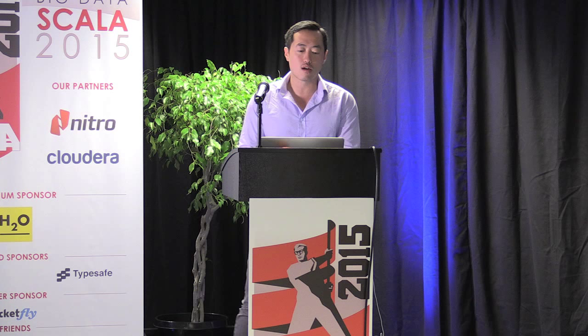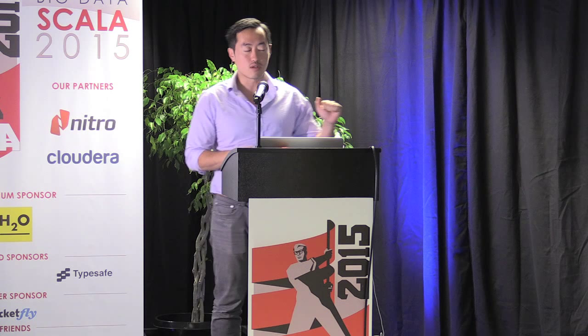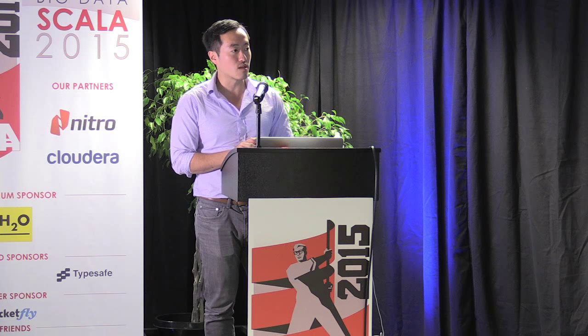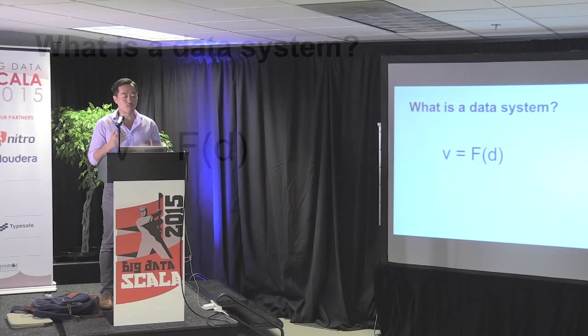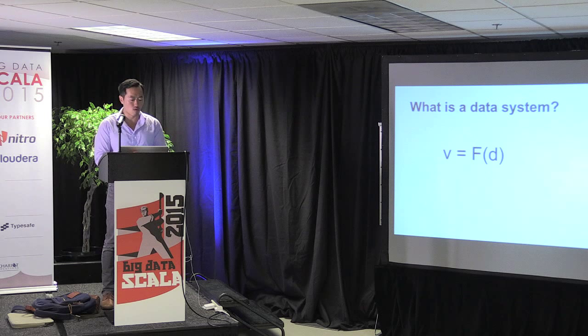What ties all these systems together is that each has input — pieces of data — and output — meaningful information. So maybe we can think of something that takes inputs and gives outputs: a function. This equation really captures what the ideal data system should be. Suppose we have an infinitely fast computer — on every request for view V, we compute function F on our data, which should be immutable.